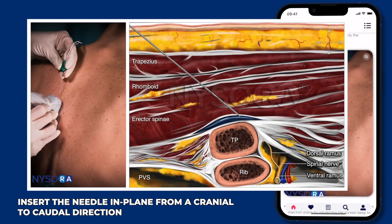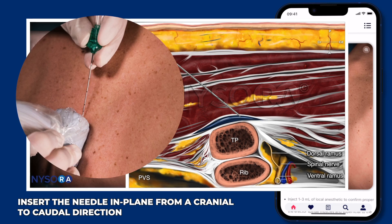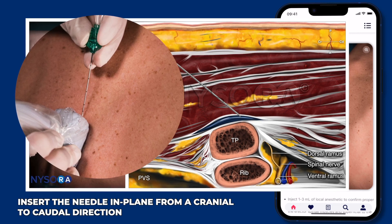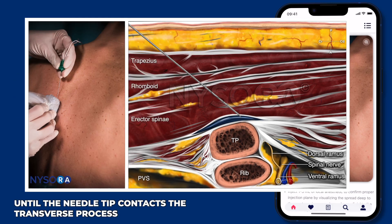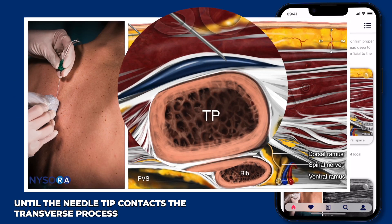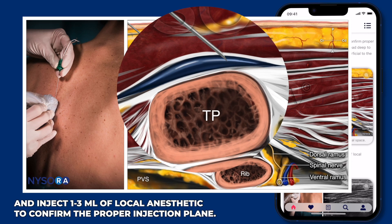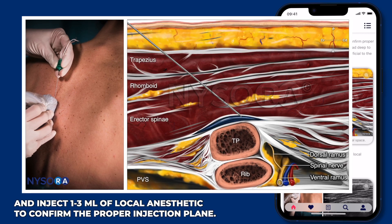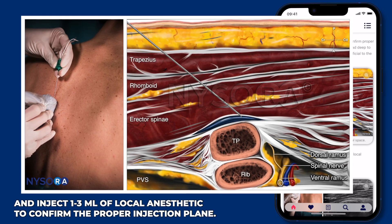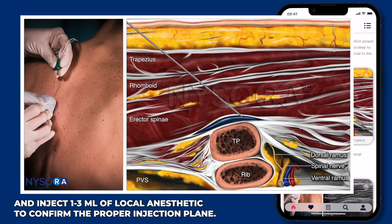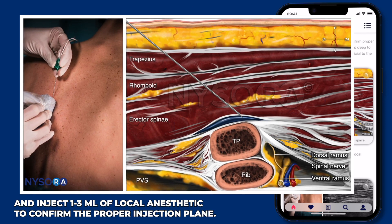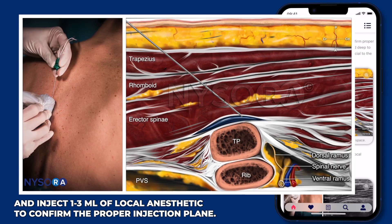Step two: insert the needle in-plane from a cranial to caudal direction until the needle tip contacts the transverse process, and inject one to three milliliters of local anesthetic to confirm the proper injection plane.